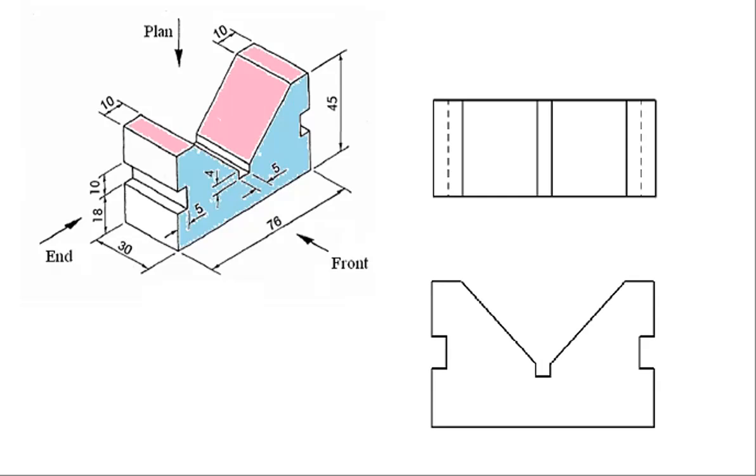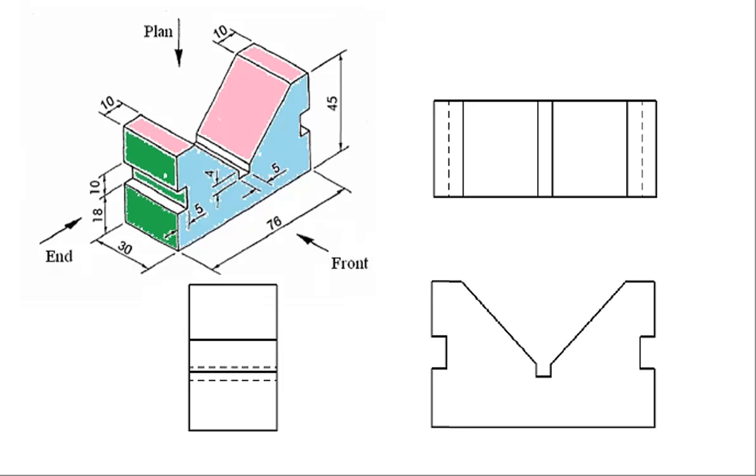We do the same for the end view. We use a color to identify what we can see directly from the end. Then we can add our end view here. After that, you can add the hidden lines. Or at the same time as you draw that, you can add hidden lines. Like this hidden line represents the cut here, these hidden lines represent the cut in here. When you watch from the end, you can't see them directly.